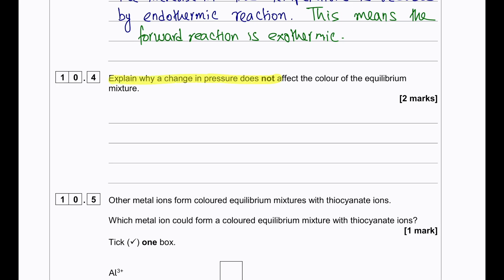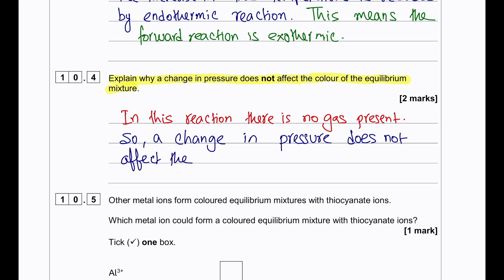Explain why a change in pressure does not affect the color of the equilibrium mixture. A change in pressure does not affect a particular reaction that is in aqueous. If there would be a gas present, then that would be affected. And as a result, the position of the equilibrium could have changed. However, since there is no gas present, so there is no change in equilibrium position.